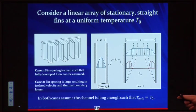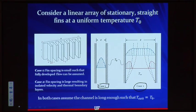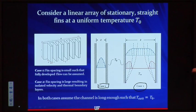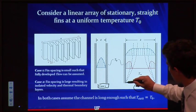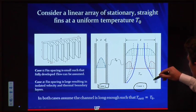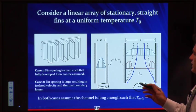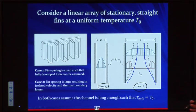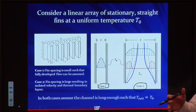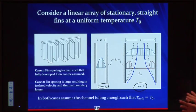In case two, the channels are so widely spaced that we have isolated thermal and velocity boundary layers on either side of the channel. This is bad because there is a core region where flow enters at T infinity and leaves at T infinity — it's not doing any cooling whatsoever. So we don't want the fins too close, and we don't want them too far apart. We need to find a happy medium where we get an optimum amount of heat transfer for a given spacing.